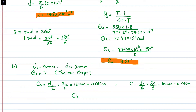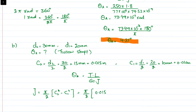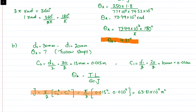The angle of twist formula remains theta_A = T·L / (G·J). For a hollow shaft, J = (π/2)(c2⁴ − c1⁴). Substituting values: J = (π/2)((0.015)⁴ − (0.010)⁴), which gives J = 63.81 × 10⁻⁹ m⁴.